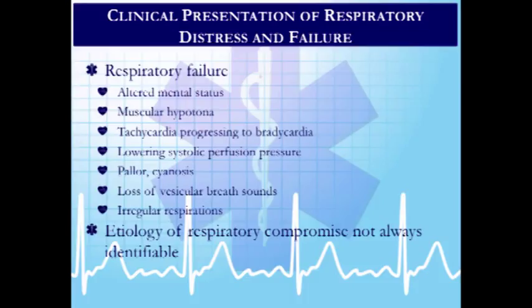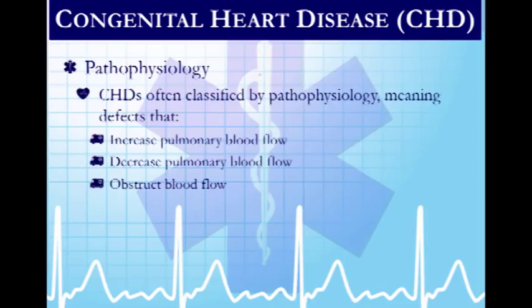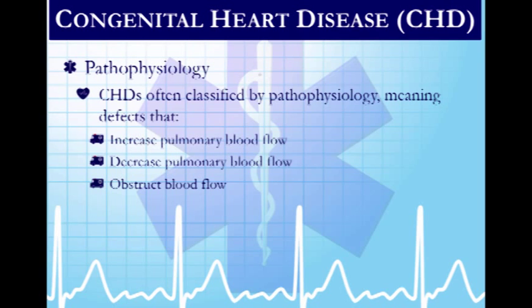In respiratory failure, the baby is not responding as expected — flaccid with poor color and mottling. Congenital cardiac defects fall into three categories: increased pulmonary blood flow such as PDA, decreased pulmonary blood flow, and obstructive blood flow. Our goal is basic and advanced life support to prevent complete failure.